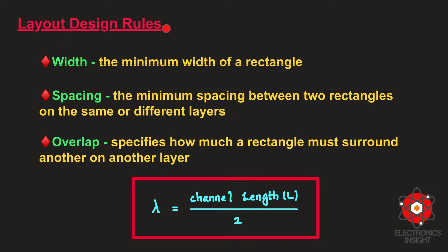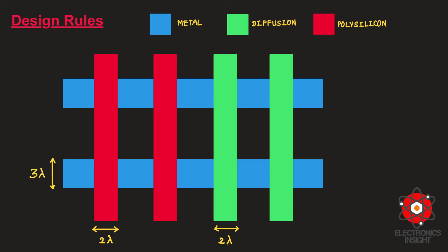Let us go more specifically into the spacing and width rules for polysilicon or metal layers in a layout diagram. Before proceeding with the design rules, we must understand why scalable lambda-based design rules were developed: they cover a wide range of manufacturing processes. These rules specify two important things — the minimum width to avoid breaks in the line, and the minimum spacing to avoid shorts between lines. Here we have metal lines, diffusion lines, and polysilicon lines, each indicated using their color codes.